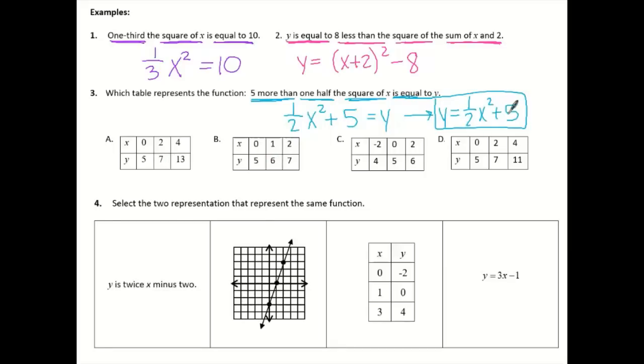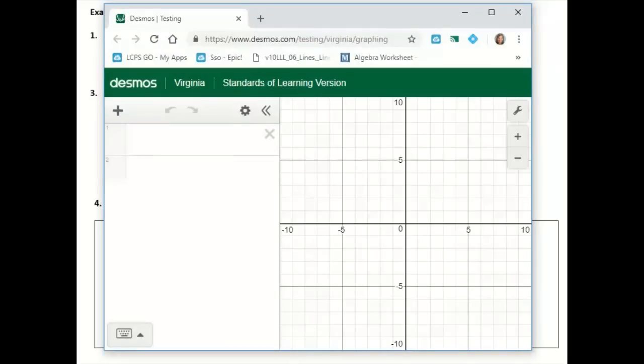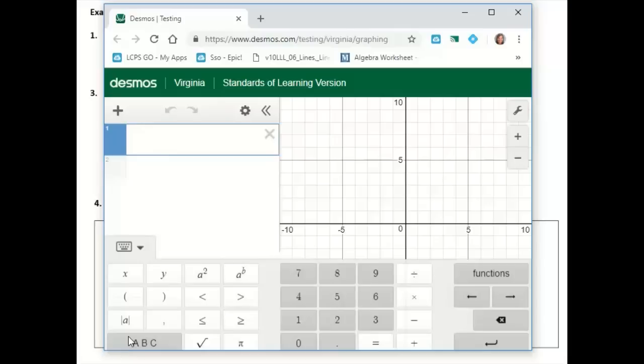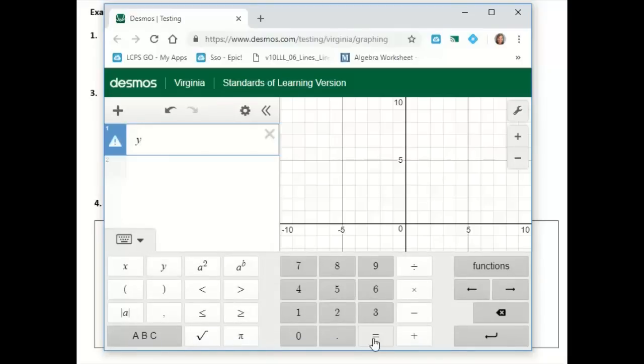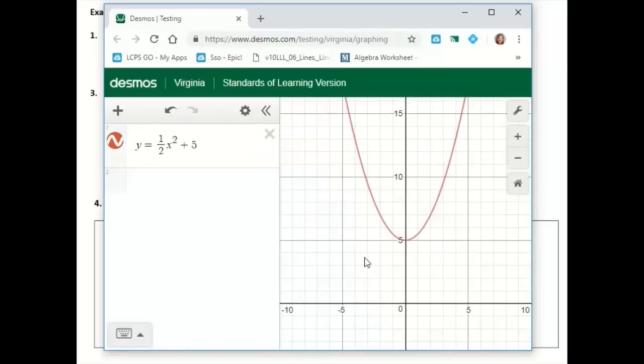And now we want to know which one of these tables matches that. So you can go ahead and pull up Desmos, and we're going to type in, pull up our keyboard here, Y equals, we have one half, arrow out of the bottom, X squared plus 5. So we've got our picture here. This is our graph. Sometimes I'll ask for the graph. This one wants the table. So I'm going to click the gear. It says Edit List.